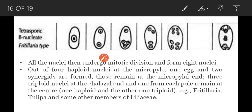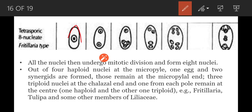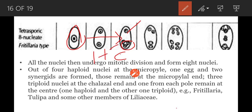First, what happens in the megaspore mother cell? The megaspore mother cell undergoes meiotic division resulting in the formation of 4 megaspore nuclei. Out of these 4 megaspore nuclei, 1 nucleus is present towards the micropyle and the remaining 3 lie towards the chalaza. This arrangement is called the 1+3 arrangement. This 4-nucleated coenomegaspore has 1 nucleus at the micropylar side and the remaining 3 towards the chalaza.